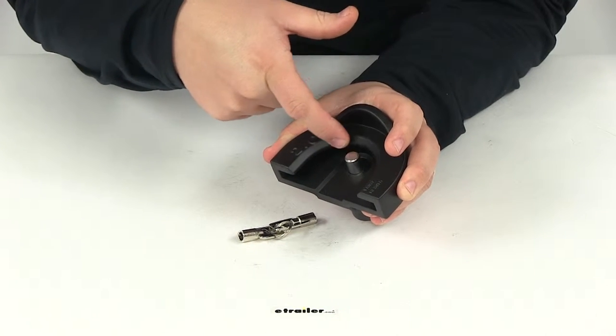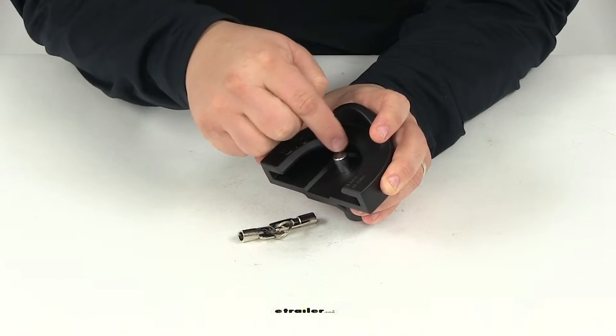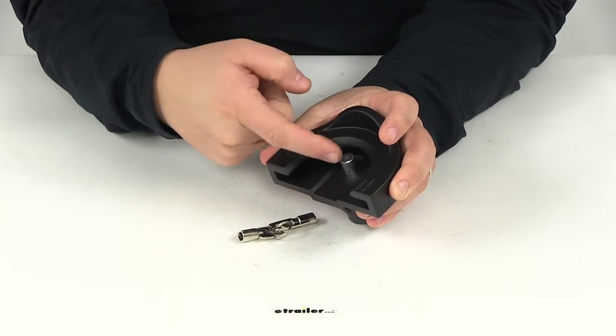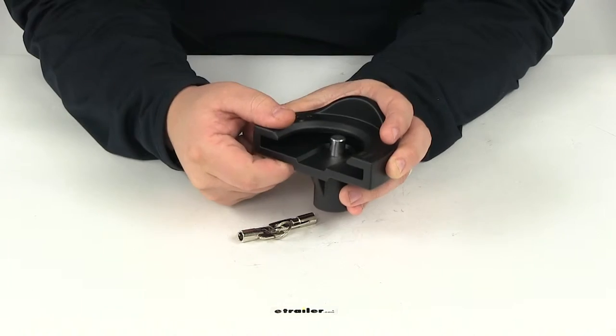In between this portion here is the down portion of the front of the socket. That's where your hitch ball goes, and that's going to prevent this from being able to back off the coupler.